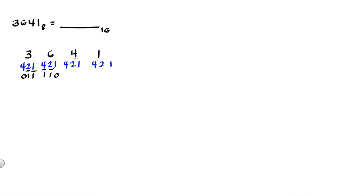Next we have 4. To get 4, all you need to do is use the 4 position, so that is 1 and the rest are 0s. Then we have 1. To get 1, all you need to use is the 1 position, so that is 1 and the rest are 0s. So 6 octal is 1, 1, 0 in binary; 4 octal is 1, 0, 0 in binary; and 1 octal is 0, 0, 1 in binary.